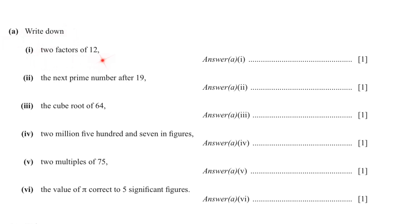Question number A. Write down 2 factors of 12. You can write any of these numbers because 1 times 12 will give you 12, 2 times 6, 3 times 4. Whatever you want to write. The next prime number after 19 is 23. If you don't know the prime numbers very well, please go through my video of different types of numbers. In A3 the cube root of 64. Either put in the calculator or 64 to the power of 1 over 3. The answer is 4. In A4, 2,507 million in figures. A million has 6 zeros. So 2,507 with 6 zeros.